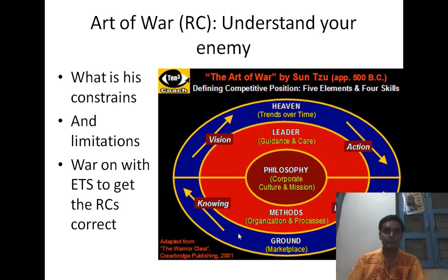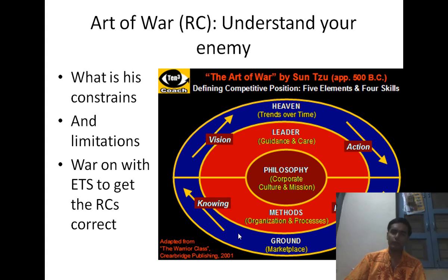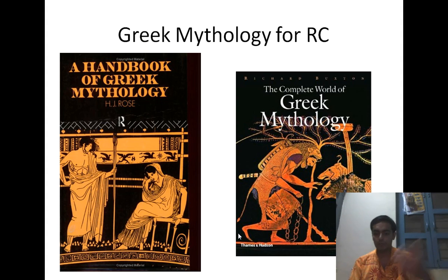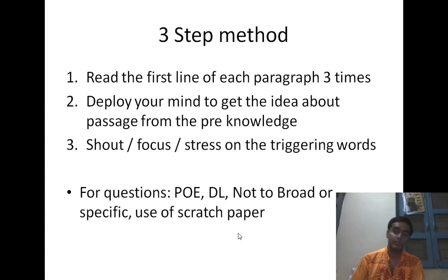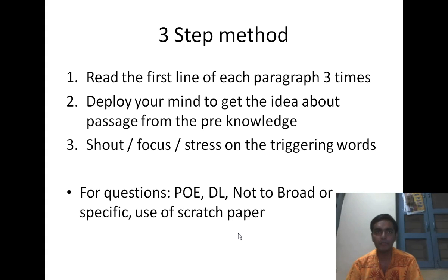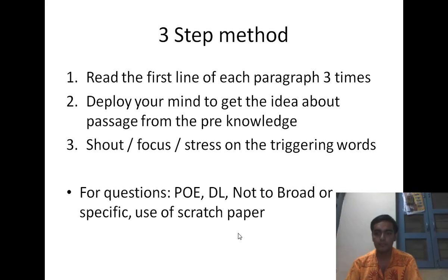We are going to talk about business judgment, and most aspects of this are like a war — you win if you do the reading comprehension right. Now, the three-step method is a very powerful method that many students have benefited from. The first step while reading: read the first line of each paragraph three times. Deploy your mind to get an idea about the passage from your pre-knowledge. And stress on the triggering of the yin-yang words. These three are the most important aspects of how you will read your reading comprehension.